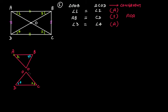So angle 1 equals angle 2, meaning A corresponds to C; angle 3 equals angle 4, meaning B corresponds to D. Therefore the remaining angles are also equal, which means we have proved that these two triangles are congruent.